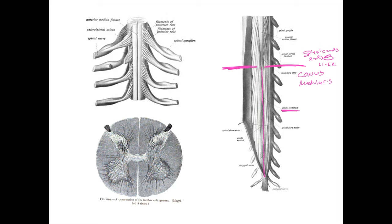Also coming off the conus medullaris are these little extensions I'm labeling in yellow — this is known as the cauda equina. Those are extensions coming off the spinal cord, and they're encased in the subarachnoid space, essentially bathed in cerebrospinal fluid, which we'll get to in just a moment.